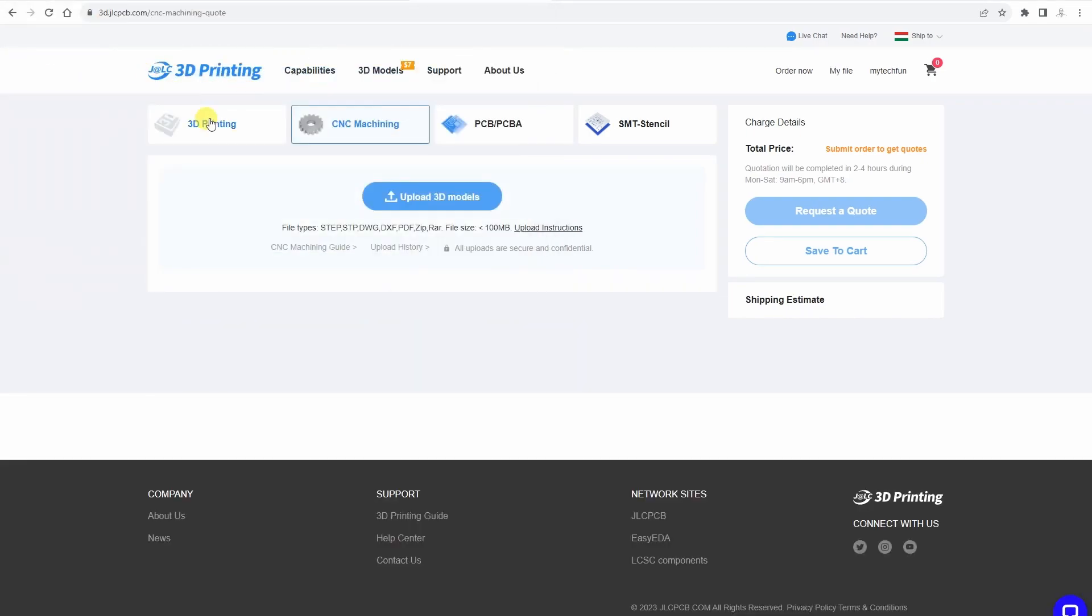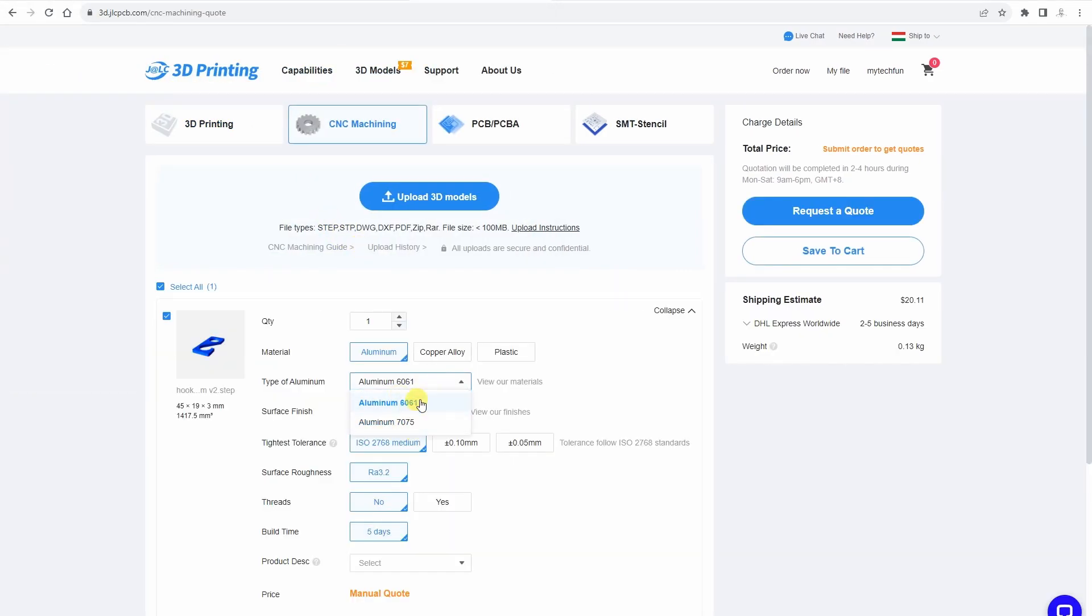And the next important step is to choose the correct material. They have two types of aluminum, brass, copper, and different plastics too. Later we'll help you choose the correct material.